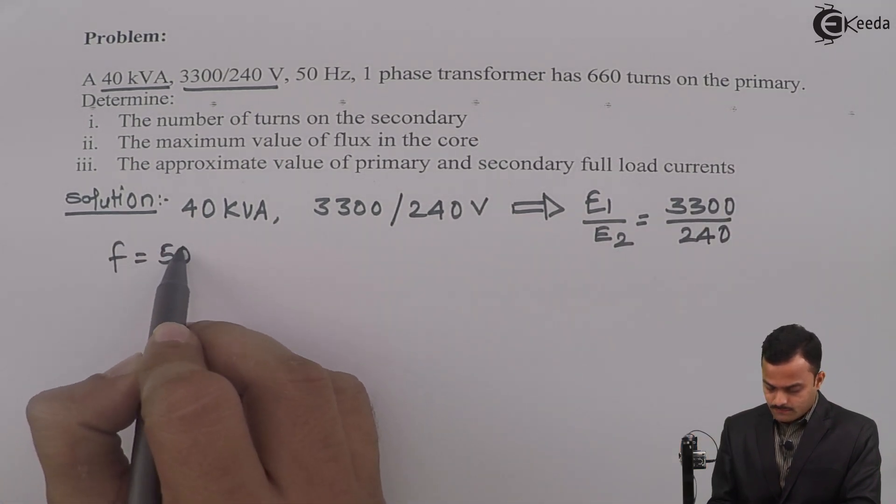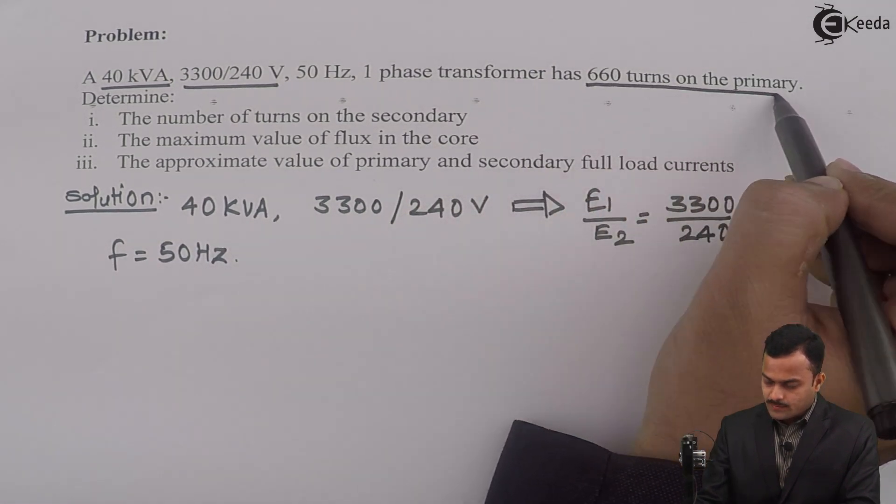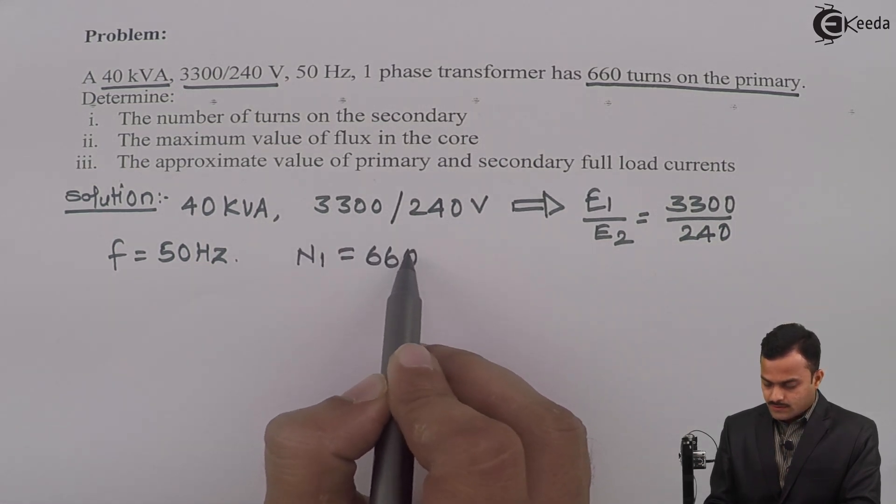Frequency, obviously, 50 hertz given. And 660 turns on the primary side. So I can say N1 equal to 660.